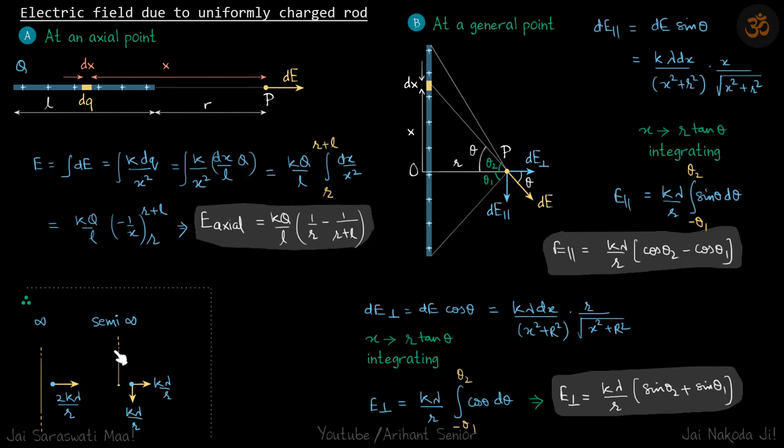Now let's take two special cases for an infinite wire. So the values of theta 1 and theta 2 for infinite will be 90 degrees. So you can see that E parallel will cancel out, that you can see from symmetry also. And E perpendicular, sin 90 plus sin 90, should be 2k lambda by r.